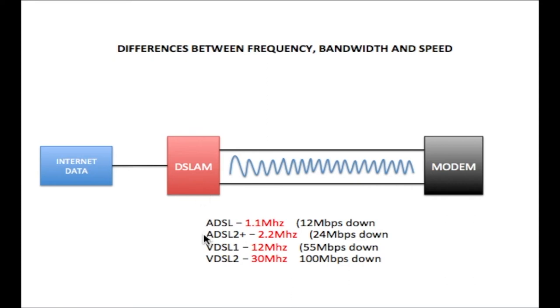Now if we go from ADSL 1 to ADSL 2 plus, we go from a frequency of 1.1 megahertz to 2.2 megahertz. So now we have doubled the frequency. If you look here you'll see that the speed has also been doubled. For ADSL 1 we have 12 megabits per second down. ADSL 2 plus we have 24 megabits per second down. This is the speed that your internet data is being taken from the DSLAM to the modem.